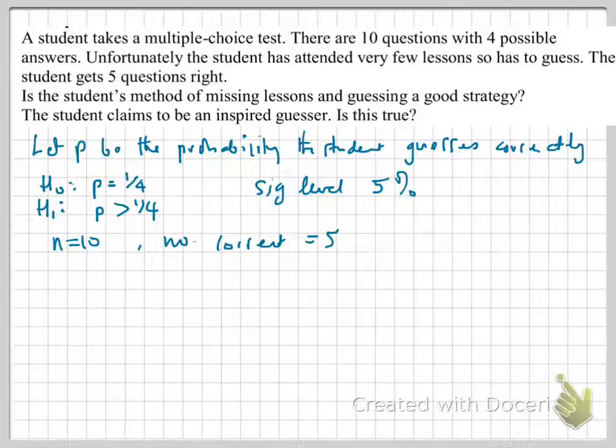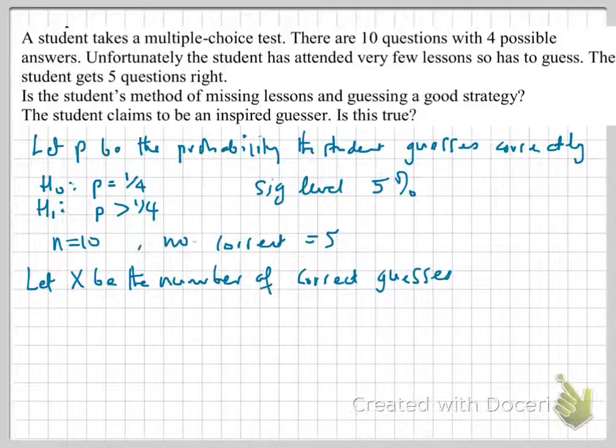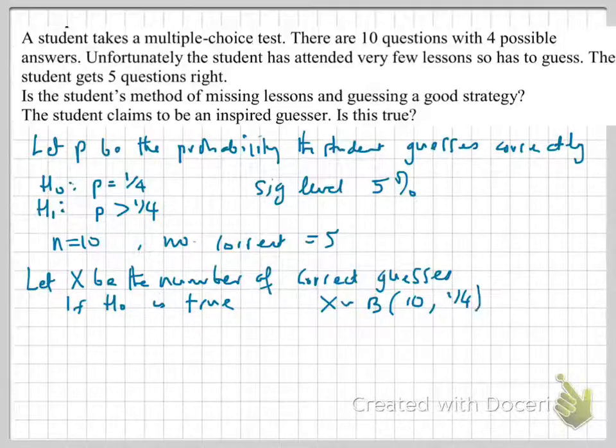So, in order to model this using some statistics, we can define X for a binomial distribution. And we'll define it as the number of correct guesses. So, let's say, let X be the number of correct guesses. OK, and therefore, if H0 is true, in other words, the probability of getting a correct answer is a quarter, then we know X is binomially distributed where we had 10 result items with a probability of a quarter.